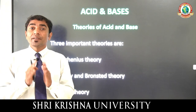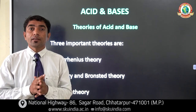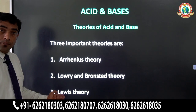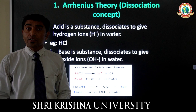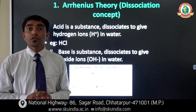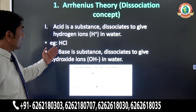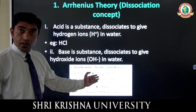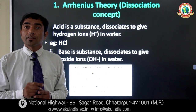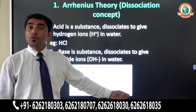Acids and bases are correctly defined and categorized by some theories: Arrhenius theory, Brønsted-Lowry theory, and Lewis theory. The Arrhenius theory is also known as the dissociation theory. According to Arrhenius, acids are substances which donate hydrogen ions in aqueous medium — for example, HCl dissociates to give H⁺ ions. Bases are substances which give hydroxyl ions (OH⁻) in aqueous solution — for example, NaOH dissolved in water gives OH⁻ ions.